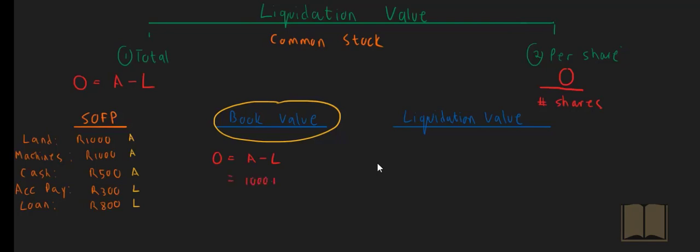You have land worth a thousand rand, machinery worth a thousand rand, and cash worth 500 rand. You take away your liabilities, which is your accounts payable of 300 rand and your long term loan of 800 rand. The total assets amount to 2,500 and your total liabilities amount to 1,100, therefore the total equity stake according to the book value valuation model is 2,500 minus 1,100, which gives you 1,400.